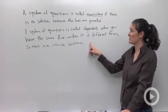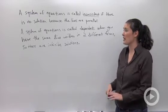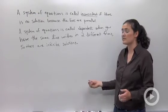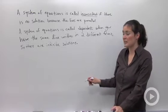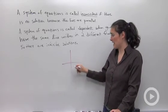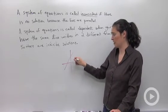A system of equations is called dependent when you have the same line written in two different forms. So there are infinite solutions. Like for example, let's just say I have the line, I'm just going to graph it really roughly,